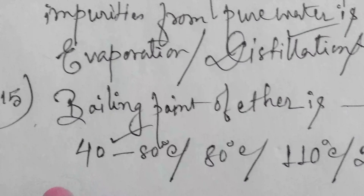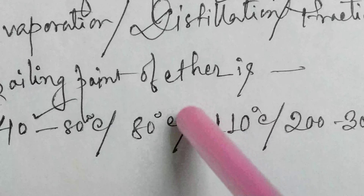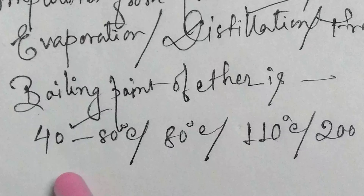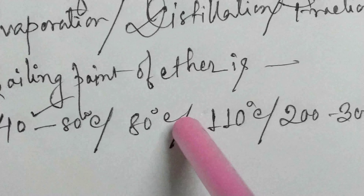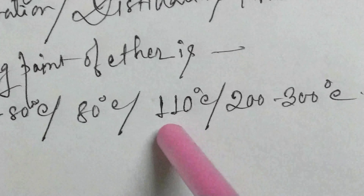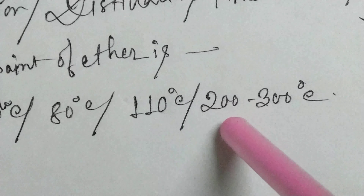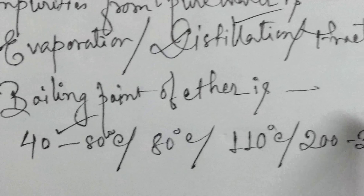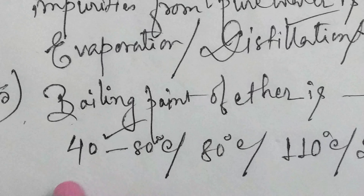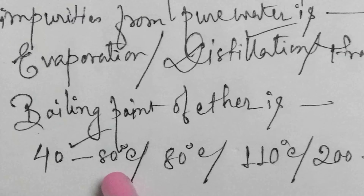The last question: the boiling point of ether is: 40–80 degrees Celsius, 80 degrees Celsius, 110 degrees Celsius, or 200–300 degrees Celsius. The answer is 40–80 degrees Celsius.